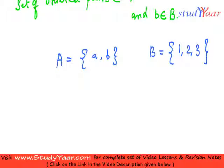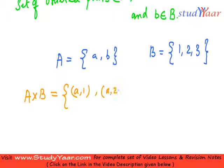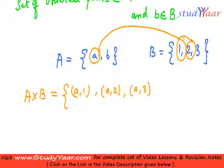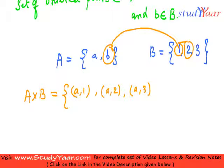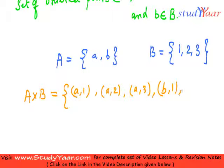The Cartesian product A cross B in this case is going to be all the ordered pairs: (a,1), (a,2), (a,3) — so we associate a with 1, 2, and 3. Similarly, we get (b,1), (b,2), and (b,3).